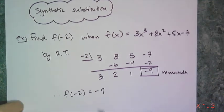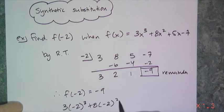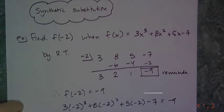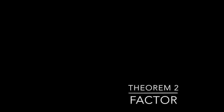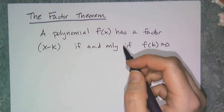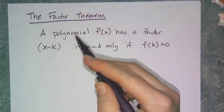And if I want to verify it, then I go ahead and do 3 times negative 2 to the third power plus 8 times negative 2 to the second power plus 5 times negative 2 minus 7, and that also gives me negative 9. So that's the remainder theorem. Once you have the remainder theorem, a natural progression from that is the factor theorem.